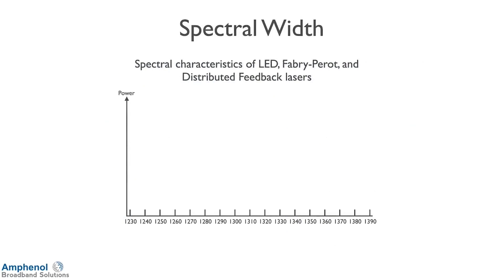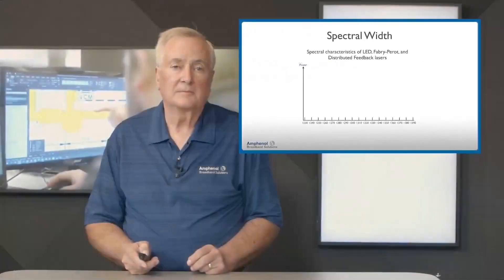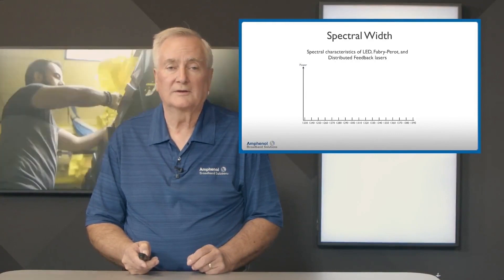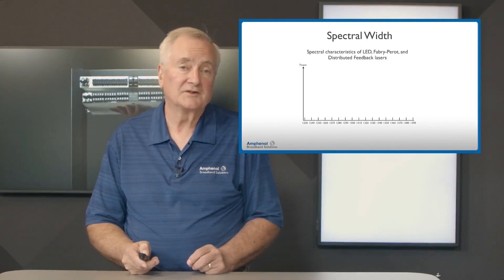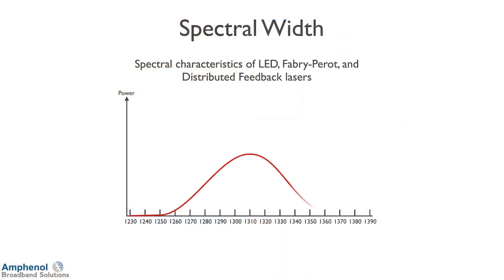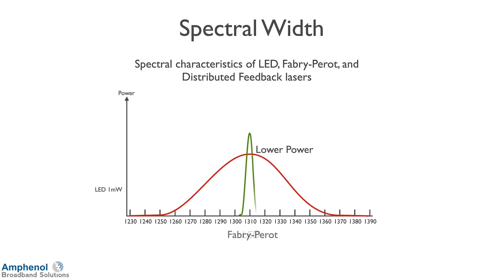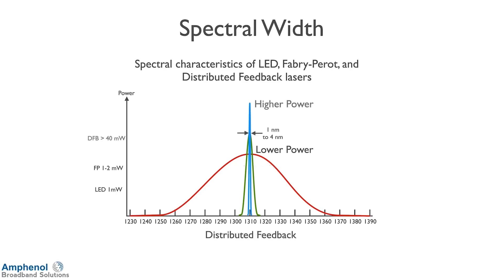Let's look at the spectral width of the different lasers. On the bottom I'm showing wavelengths going from 1230 to 1390 nanometers, centered at 1310 nanometers, just for this example. The LED is 60 nanometers wide with a power of 1 milliwatt — very low power but very wide. The FP has a very narrow wavelength of 4 nanometers, with output power of 1 to 2 milliwatts. The distributed feedback laser has very high power — usually greater than 40 milliwatts — but a very narrow wavelength of 1 nanometer.